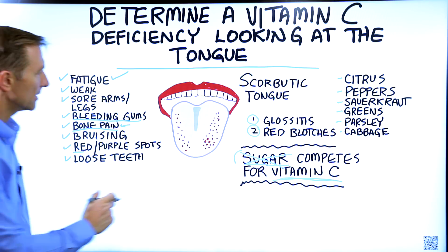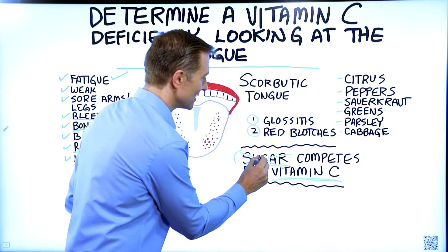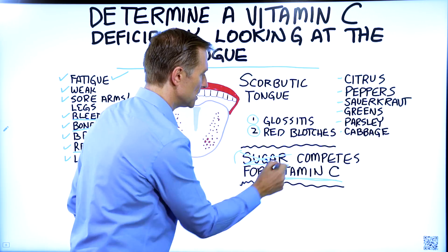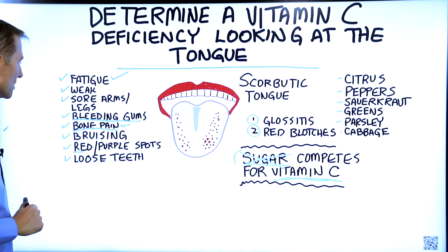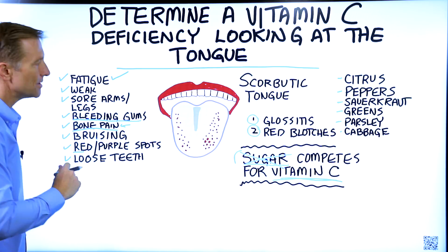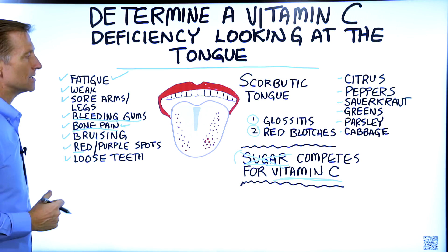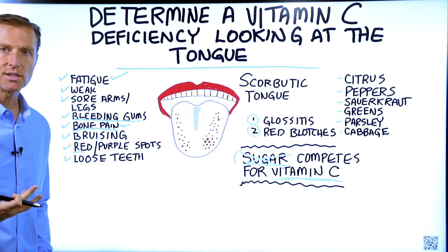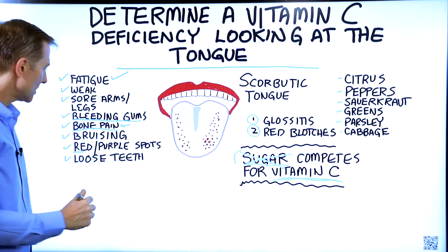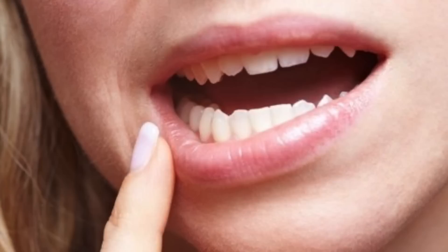That connection to diabetics makes sense because sugar competes for vitamin C and diabetics have high levels of sugar. Also, because vitamin C is necessary to strengthen collagen, tendons, and ligaments, you may find that your teeth are loose.